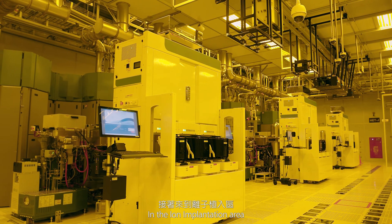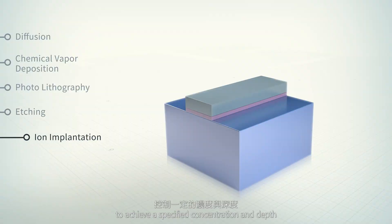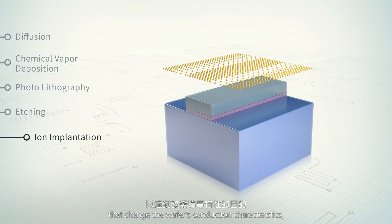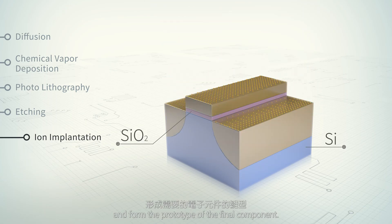In the ion implantation area, charged ions are implanted into designated areas to achieve a specified concentration and depth that change the wafers' conduction characteristics and form the prototype of the final component.